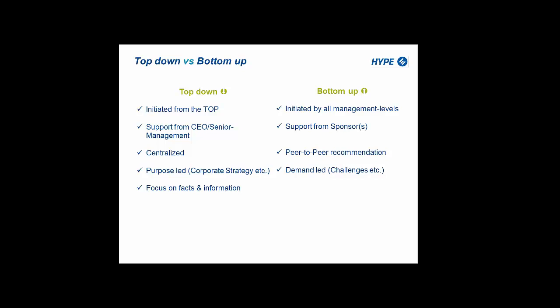Bottom-up initiatives often rely on peer-to-peer recommendation rather than mass emails — maybe activities for a certain group of people, and you hope that through viral effects people get aware of them, spreading information by simply talking to their peers, colleagues, and office neighbors. They are focusing a lot on a certain demand that is available right now — a typical example would be a current challenge that is only reaching out to a portion of a certain division or department. The viral aspects play a role here. The question is always what is the right approach for you — there is no single correct answer, since the top-down approach isn't always needed in a certain scenario, and neither is the bottom-up.